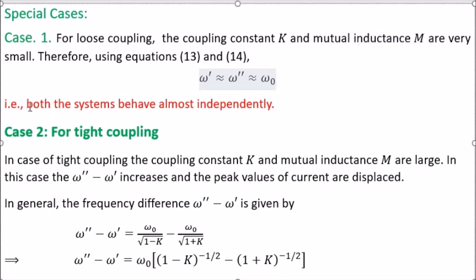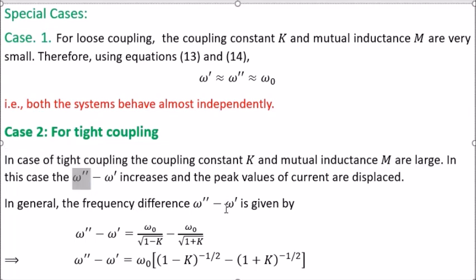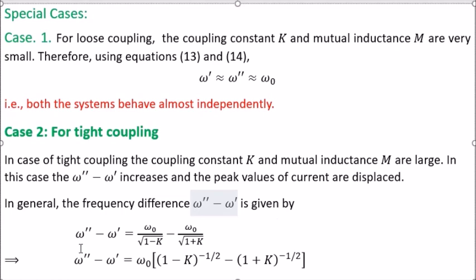Special Case 1: Loose coupling — when the coupling constant k and mutual inductance M are very small. In this case, k is negligible in equations 13 and 14, so both frequencies approach omega naught. Therefore omega dash is approximately equal to omega double dash, which equals omega naught. Both systems behave almost independently, just as in the case of loosely coupled pendulums.